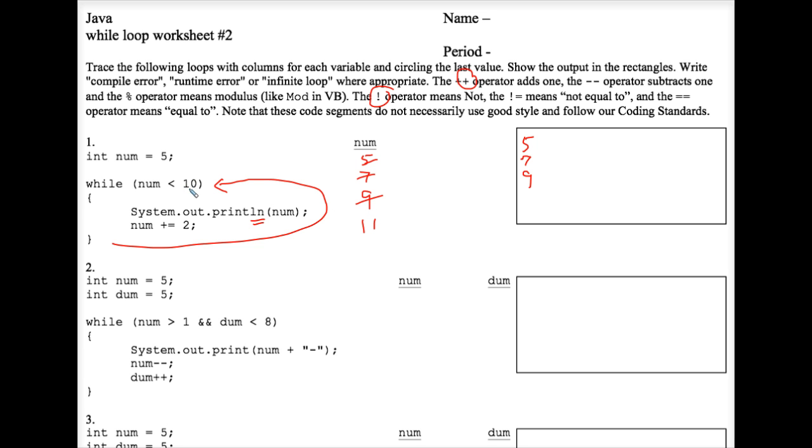But 11 is not less than 10. At that moment, the control expression is false. We don't execute the loop anymore, and we are finished with the code segment. Circle your final values, since it tells you to do that in the directions up here, circling the last value. And just know that the output is 579.